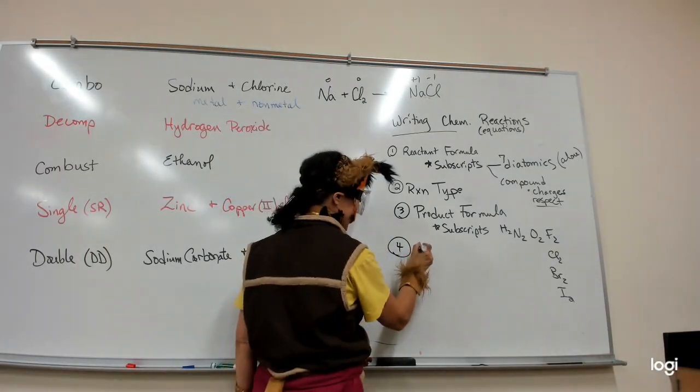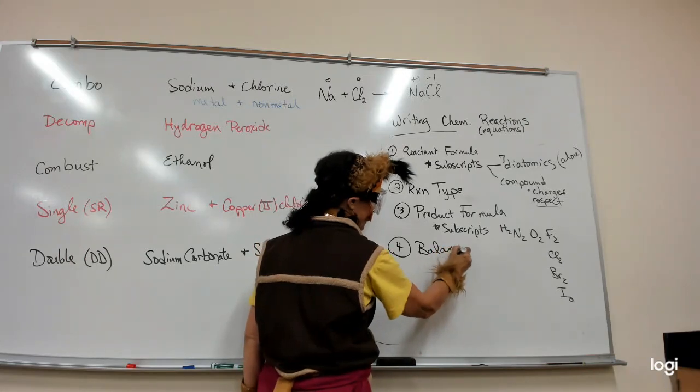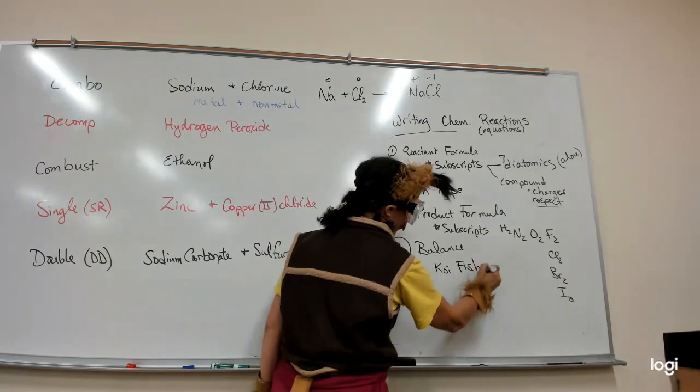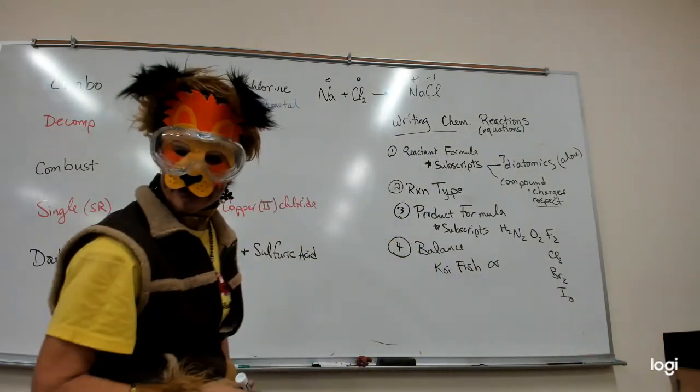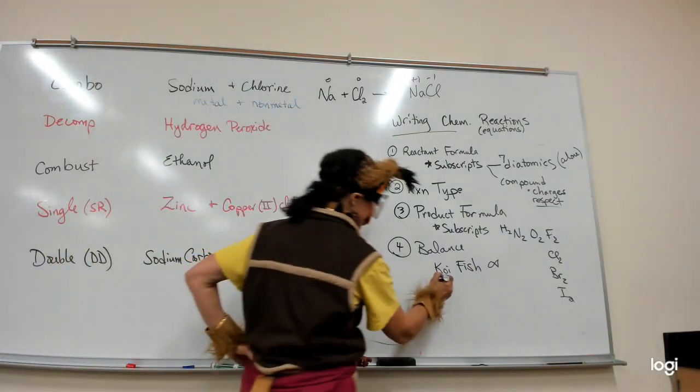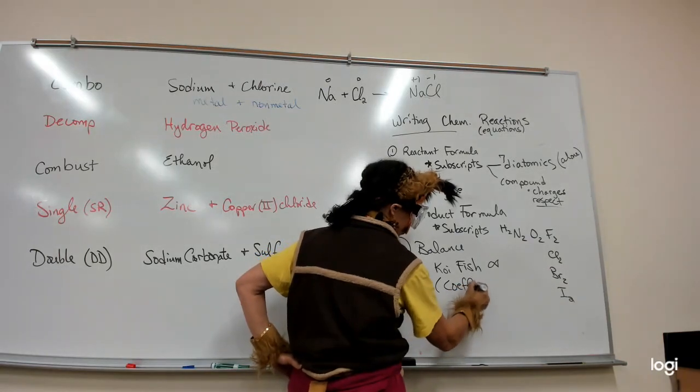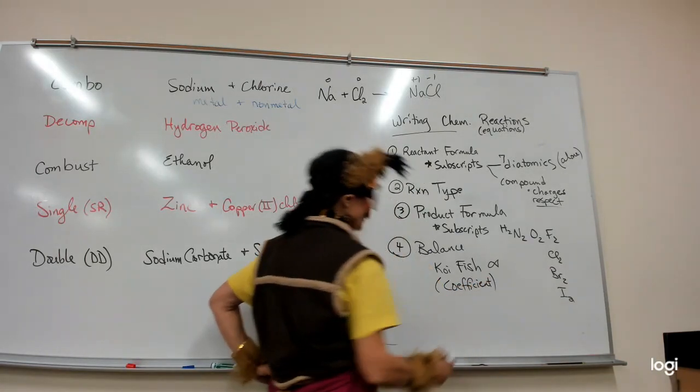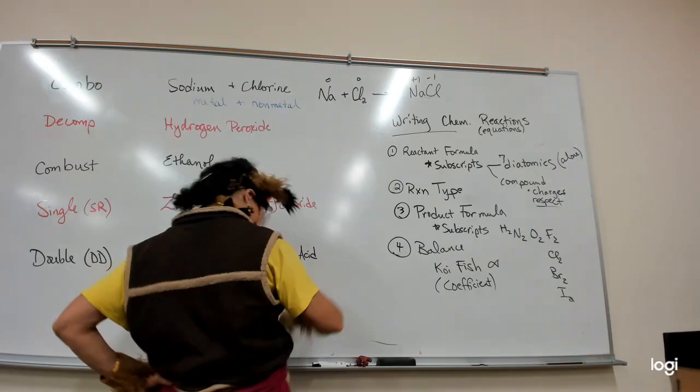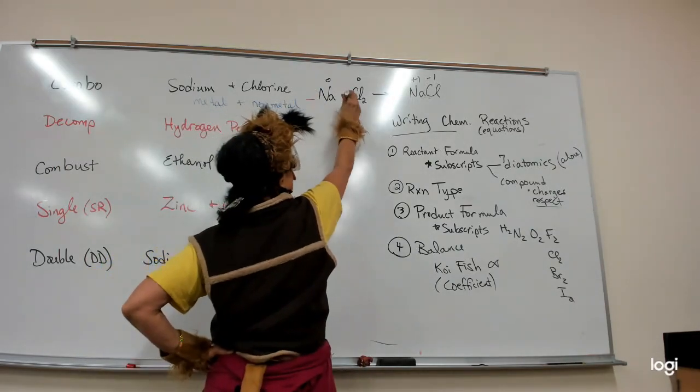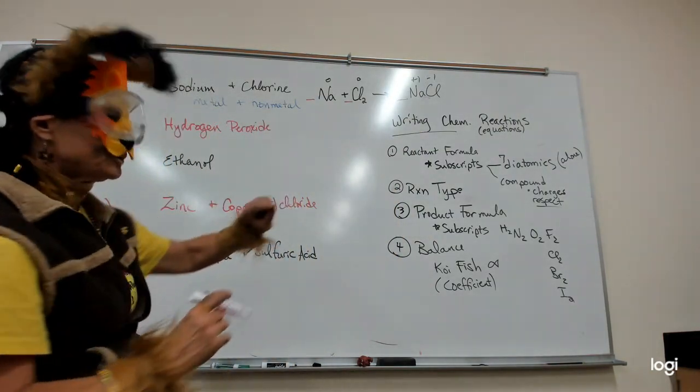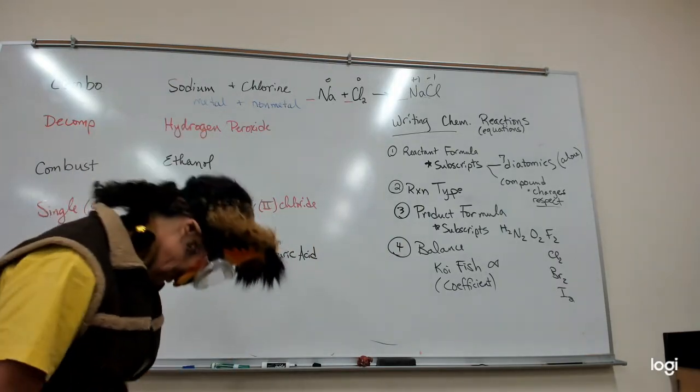That's why there's a fourth step. And that is where we balance. That's where my dear friend, the koi fish come in. This is truly called a coefficient. We balance. So if you like, you can put the little lines. At this point, you do not change the subscript. We got the subscripts. We're respecting them. R-E-S-P-E-C-T.